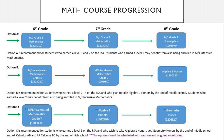Option B is an accelerated path, recommended for students who earned a Level 2, 3, or 4 on the FSA. If you're a high Level 2, we may still place you in accelerated math, especially if you're an AVID student. One thing we do a little differently at Crown Point is we usually place students in Pre-Algebra in 7th grade to prepare them to take Algebra 1 as an 8th grader.